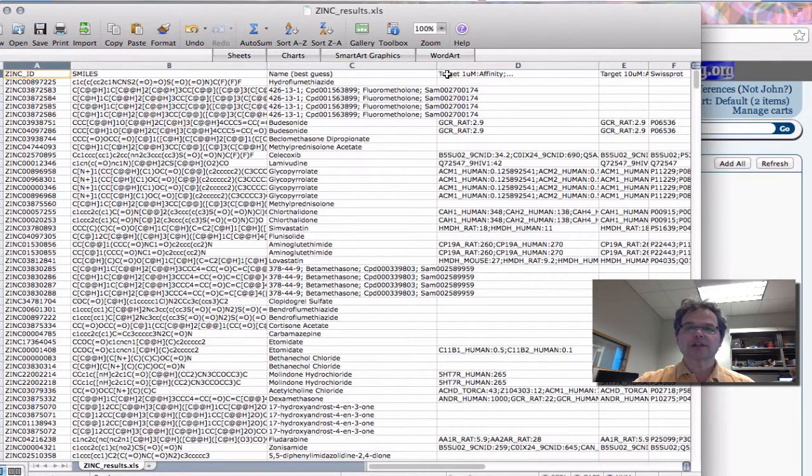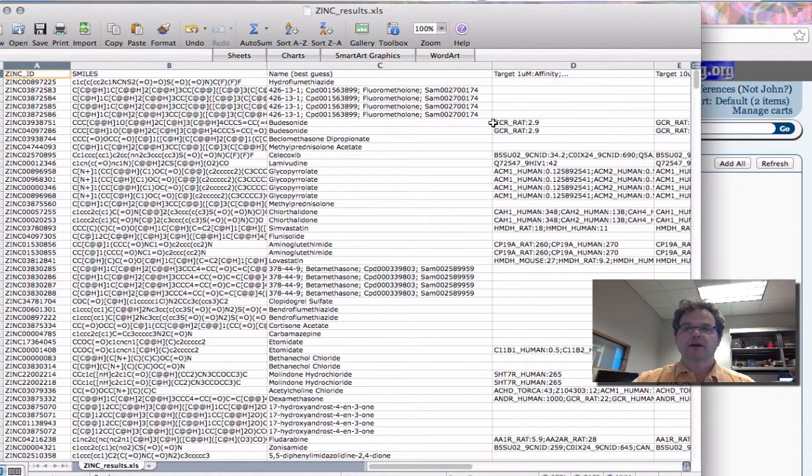This is a list of targets for this compound at 1 micromolar affinity. So what you should see here is, let's just move this over. So there's the target in, that's the Swiss, the UniProt code, and then that's the affinity in nanomolar. Okay, so 2.9 nanomolar, terrific.